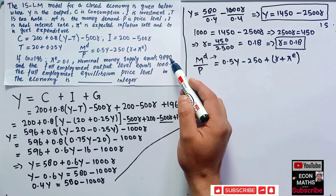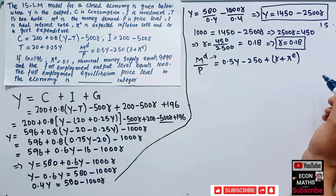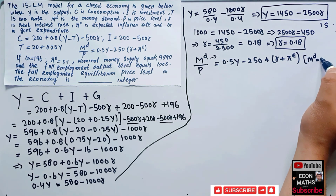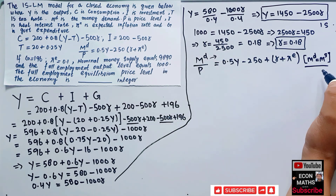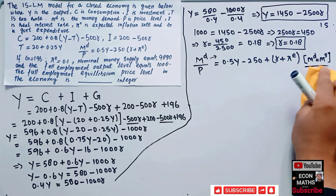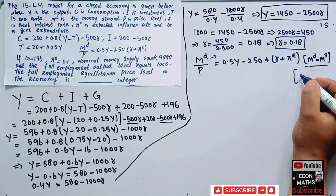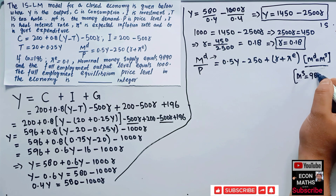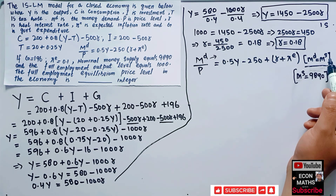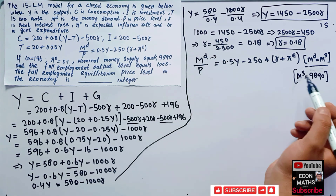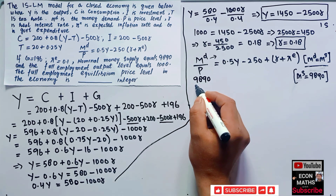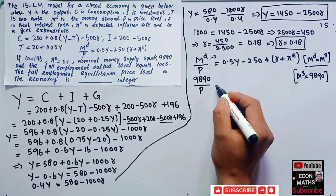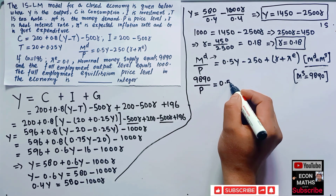Since money demand equals money supply, M^D = M^S = 9890. So we substitute M^D = 9890 into the equation, giving 9890 / P = 0.5Y - 250(r + pi^E).